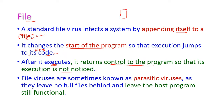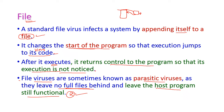Suppose we start to execute a program — the program control will initially go to the virus program, so the virus is executed first. After executing the virus, control goes back to the main program, so the execution of the virus is not noticed. File viruses are sometimes known as parasitic viruses, as they leave no full file behind and leave the host program still successfully functional.